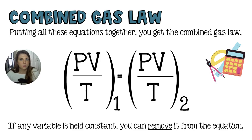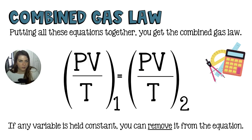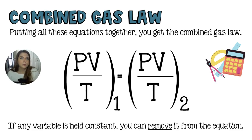If you hold any of these variables constant — say the temperature is the same throughout the experiment at 273 Kelvin — then you would plug in 273 on both sides. That means you're dividing by 273 on both sides, so you can just eliminate temperature from the equation. If you eliminate temperature, you are left with Boyle's Law: the relationship between pressure and volume. Hold any variable constant and remove it, and you get one of the individual gas laws.